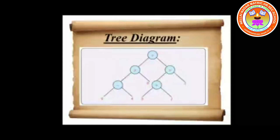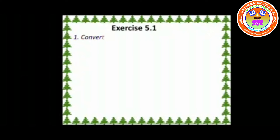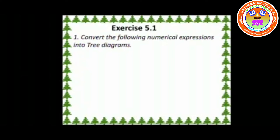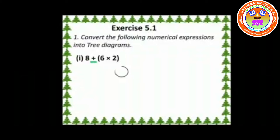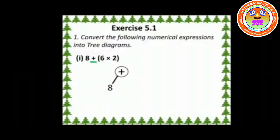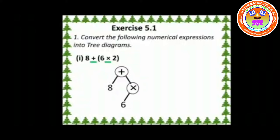Tree diagrams are generally represented by arithmetical expressions. Exercise 5.1, Question 1: Convert the following numerical expressions into tree diagrams. First one: 8 + 6 × 2. Children, first we need to take the symbol outside the bracket — that is plus. The symbol plus is the node and it has a leaf that is 8. Then the symbol inside the bracket is ×, which is the branch, and its leaves are 6 and 2.